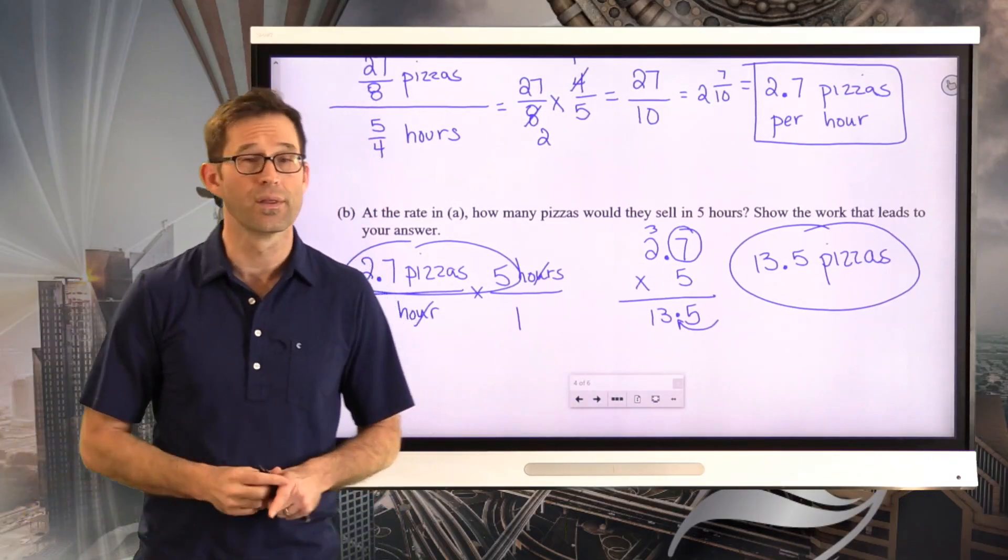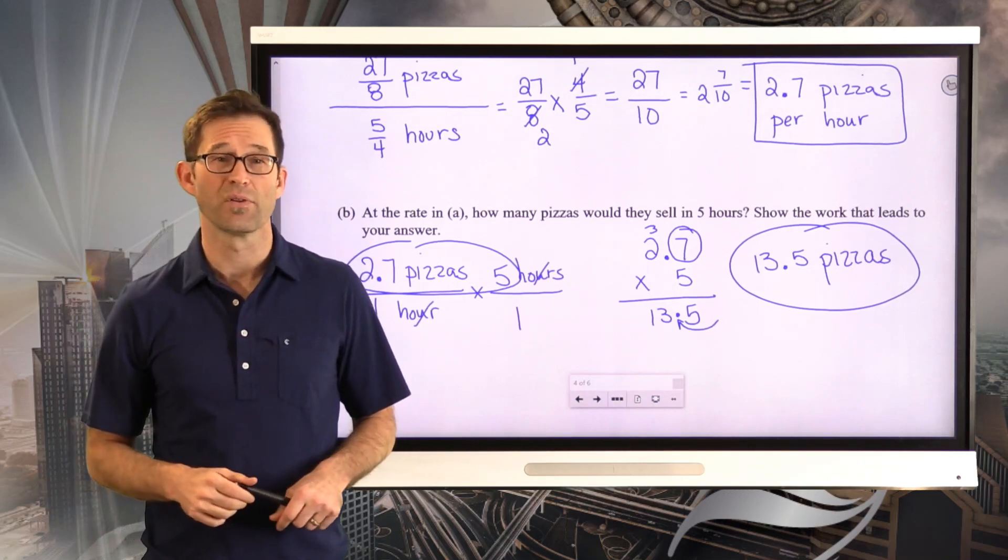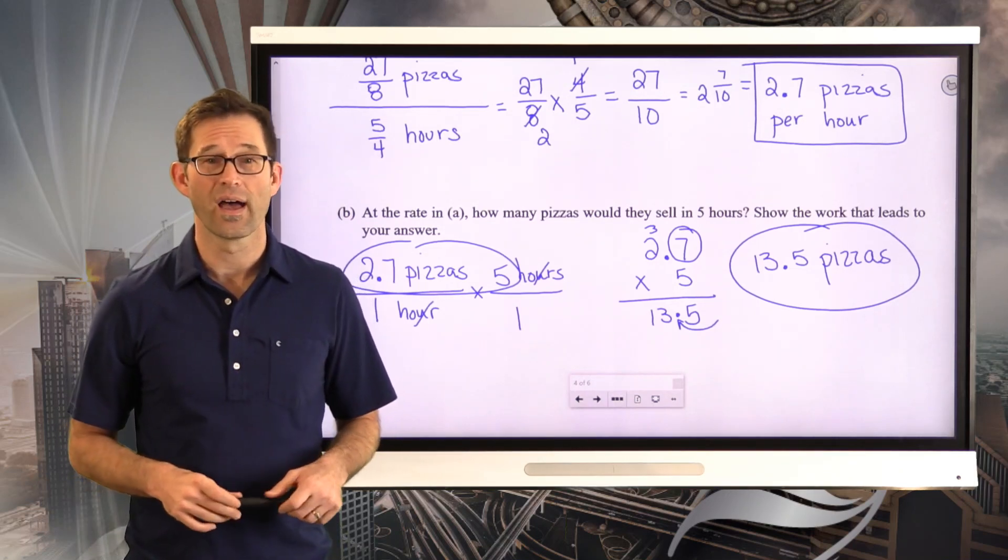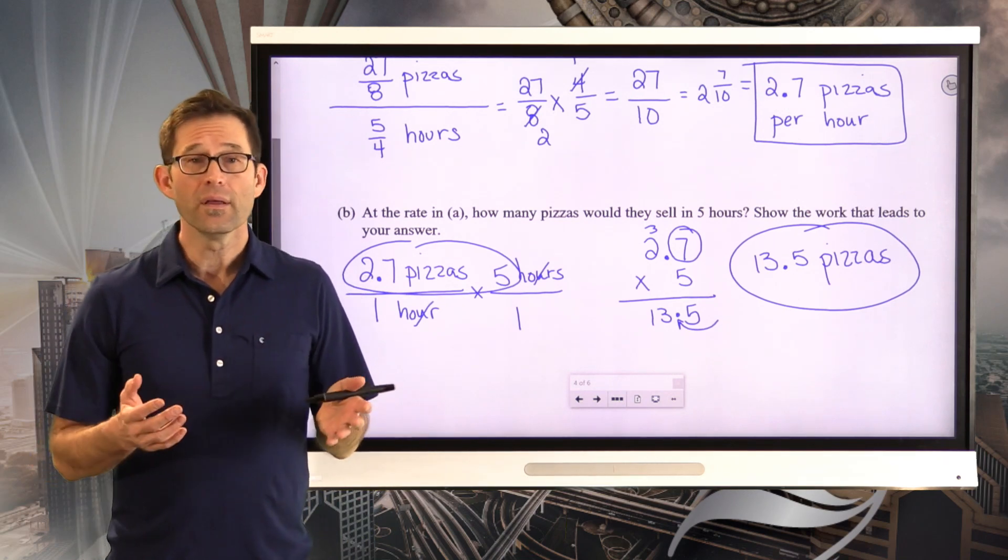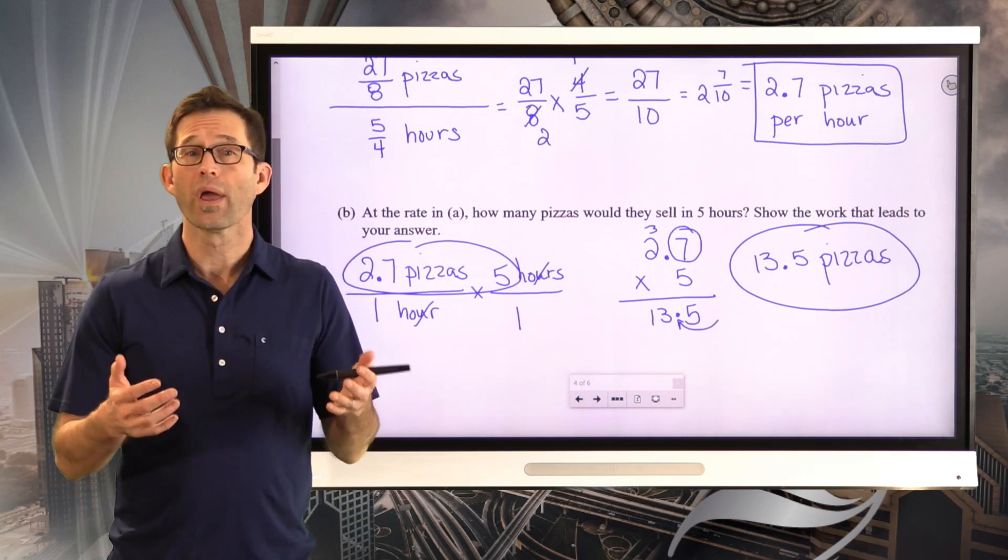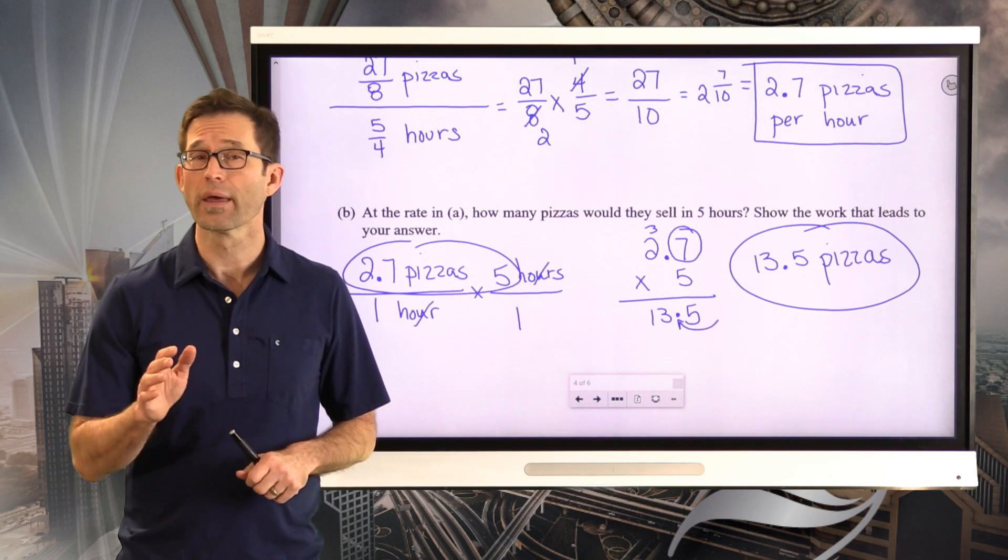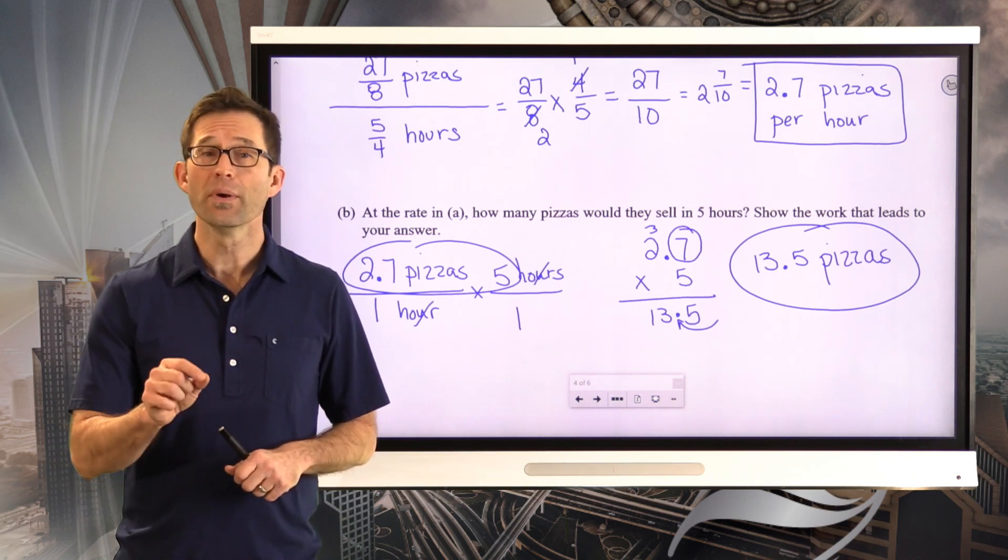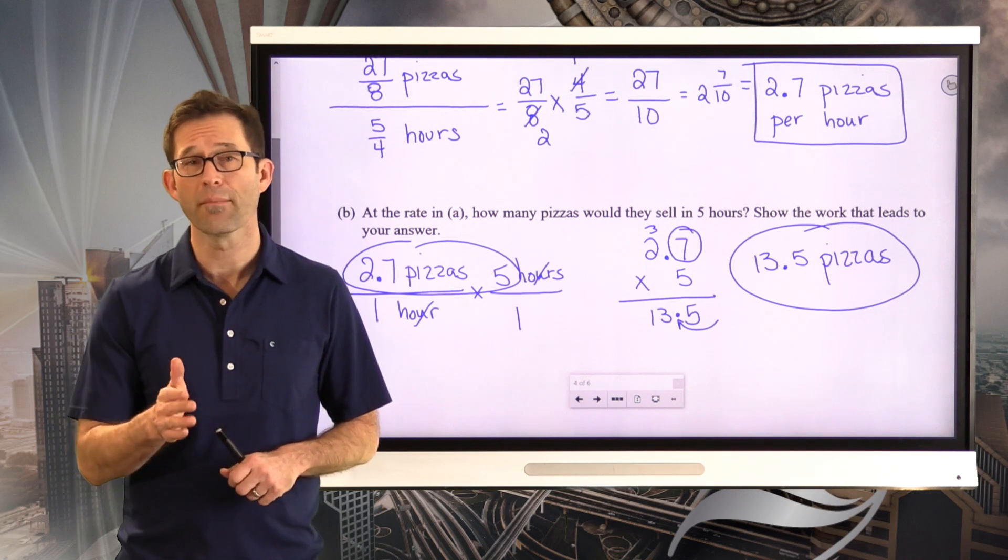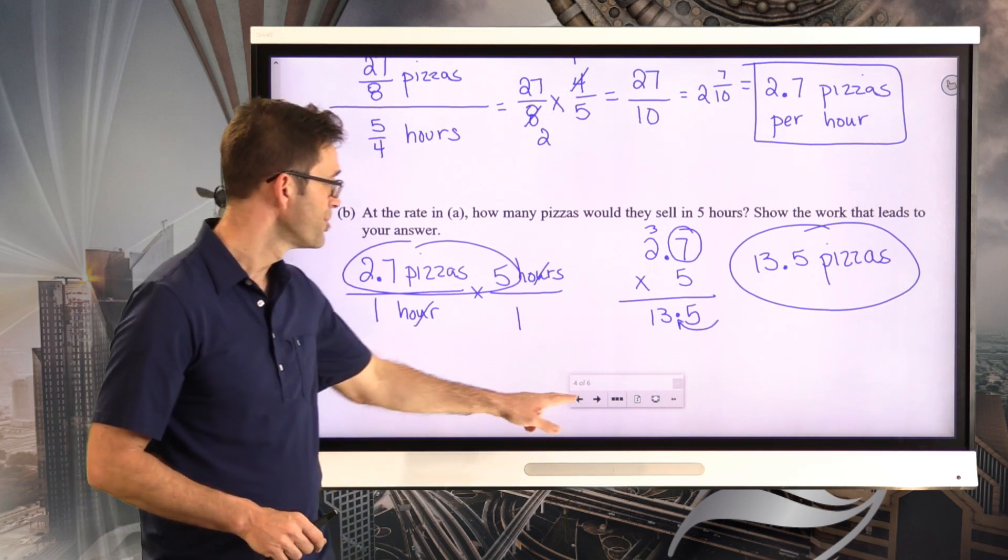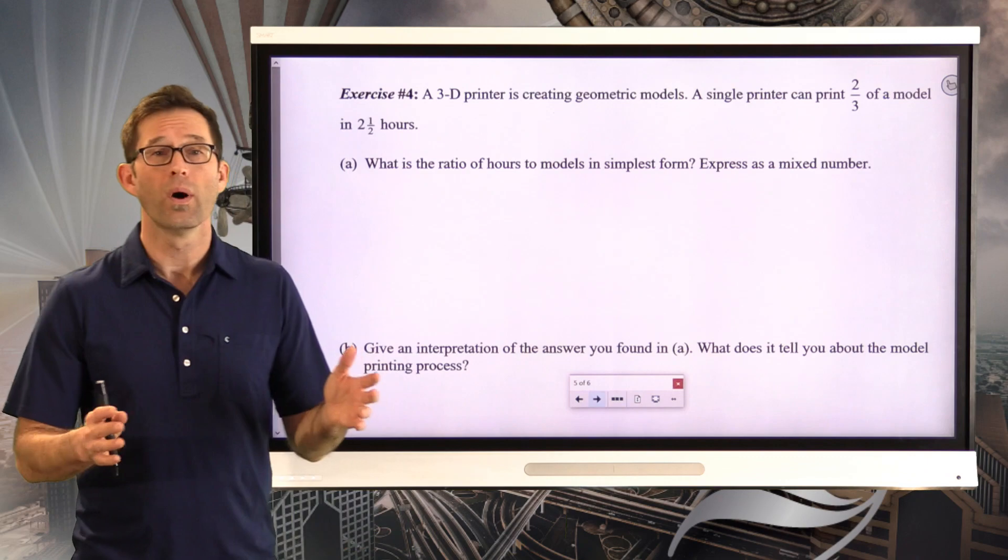I'm going to find that 13.5 pizzas are sold in five hours. Now, if you're like, well, you can't sell a half a pizza, then you've never been into a slice pizza place because you can totally sell a half a pizza. So that's it. The idea is we're setting up ratios and we're creating unit rates based on those ratios like we did in the last lesson. The big difference here is that the numerator and denominator could be fractions, and that makes them complex fractions. So let's take a look at one last exercise.